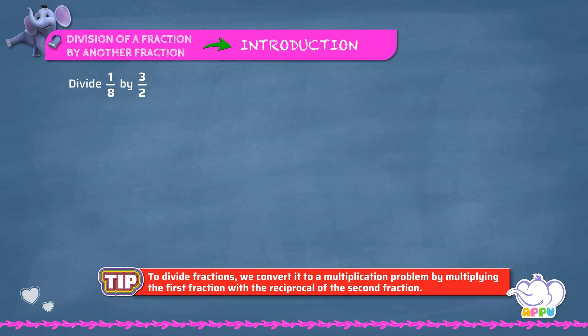Divide 1/8 by 3/2. We write this as 1/8 divided by 3/2. Then we multiply the first fraction with the reciprocal of the second fraction: 1/8 times 2/3. 2 divides 2 once, and 2 divides 8 four times. We multiply the numerators: 1 times 1 equals 1.